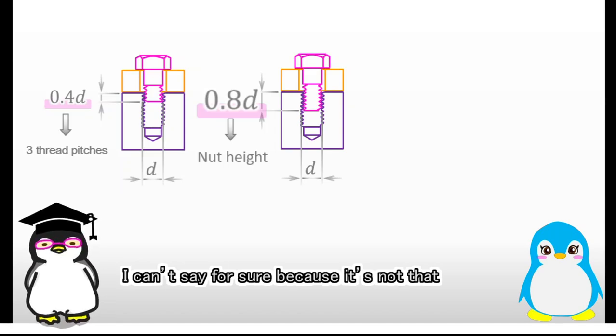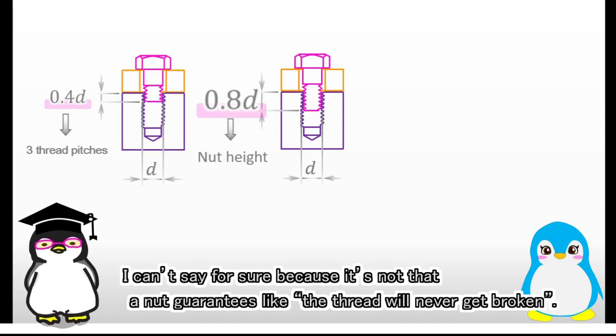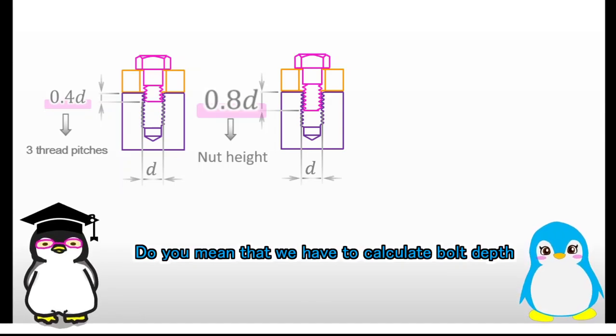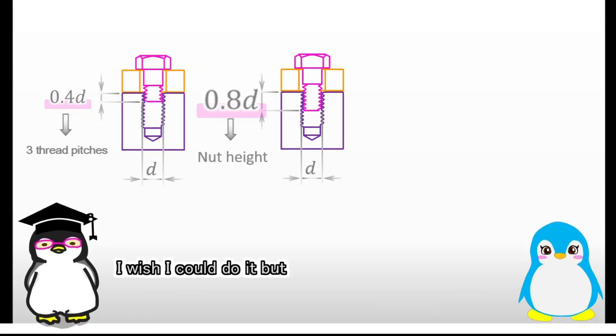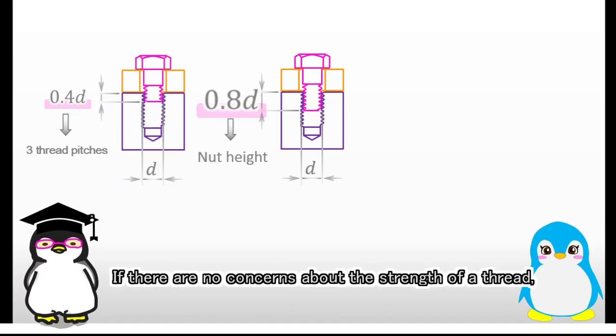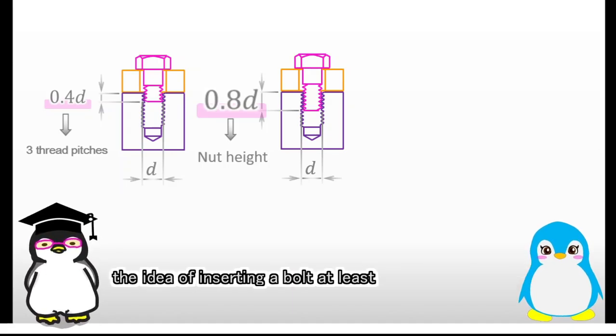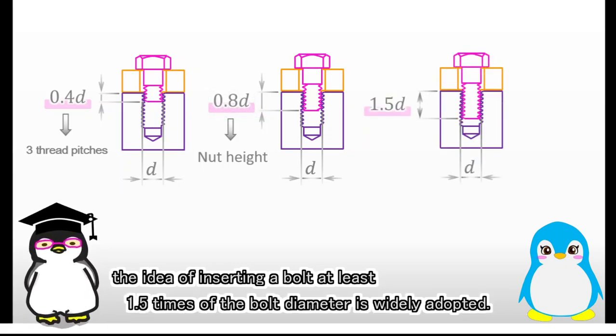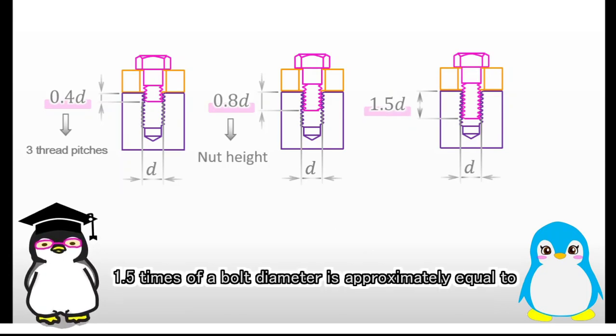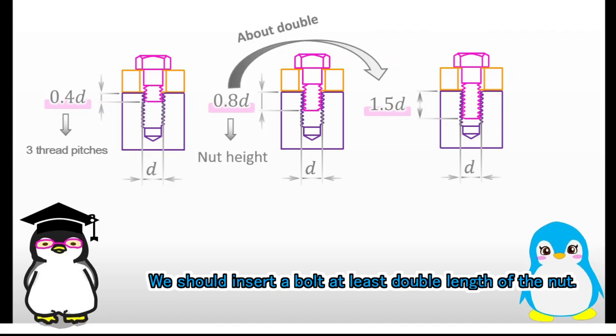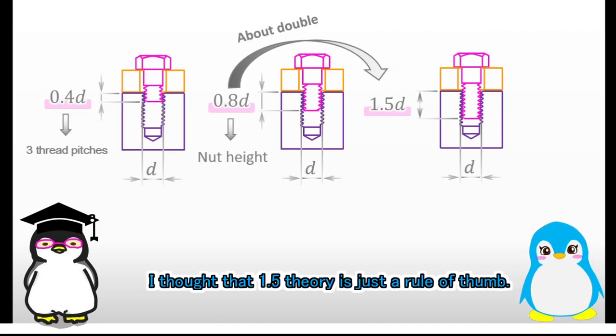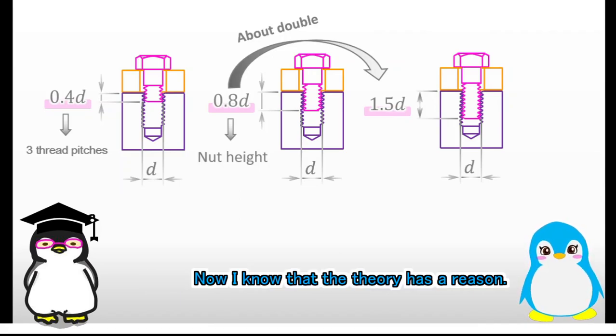Well, I cannot say for sure, because it's not that a nut guarantees the thread will never get broken. Do you mean that we have to calculate bolt depth depending on the situation every time when we design a part that has threads? I wish I could do it, but a new machine would never be completed if I did it. I can agree with you, but what should we do? If there are no concerns about the strength of a thread, the idea of inserting a bolt at least 1.5 times of the bolt diameter is widely adopted. 1.5 times of a bolt diameter is approximately equal to double length of the height of the nut.